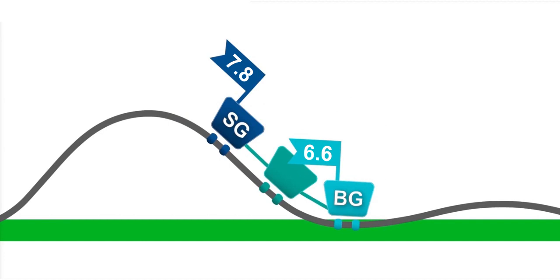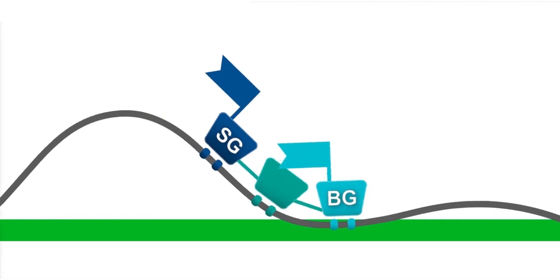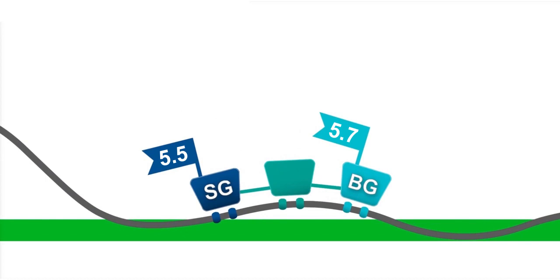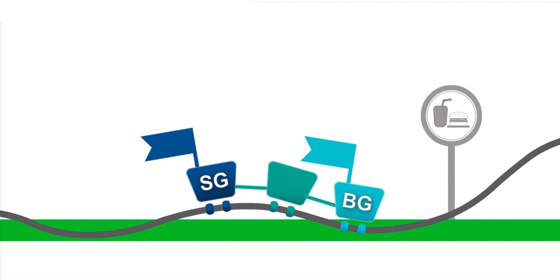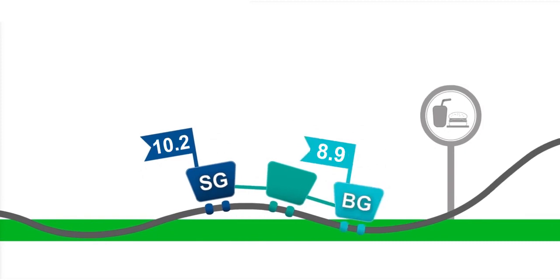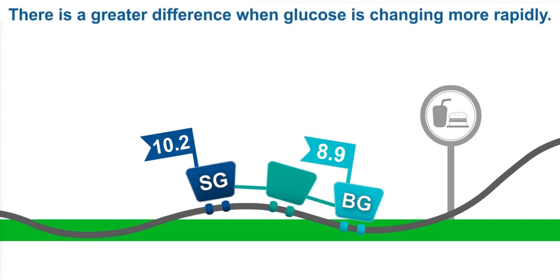Most often, the BG and SG numbers will be close to each other. You'll see a greater difference between BG and SG on the bigger hills, or when glucose is changing more rapidly.